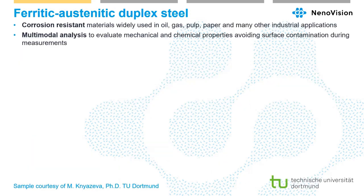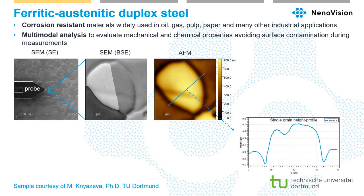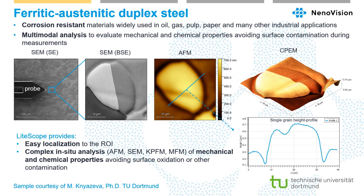For ferritic-austenitic black steel — studied for corrosion resistance in industrial applications — we can see different phases of the material even within a single grain. Complex analysis is important to understand grain size, phase boundaries, and other properties at the nanoscale.